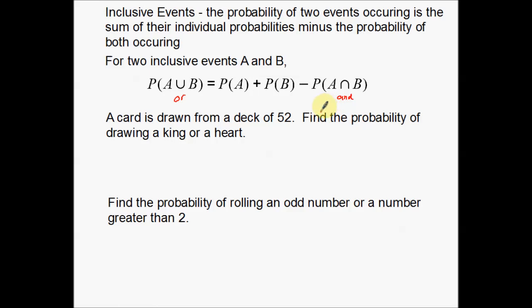That might be a little confusing at first, but we'll go over a couple of examples. A card is drawn from a deck of 52. These are your standard playing cards — spades, clubs, diamonds, and hearts. Thirteen cards in a suit: ace, two, three, four, five, six, seven, eight, nine, ten, jack, queen, and king. What we want to do is find the probability of drawing a king or a heart from a deck of 52.